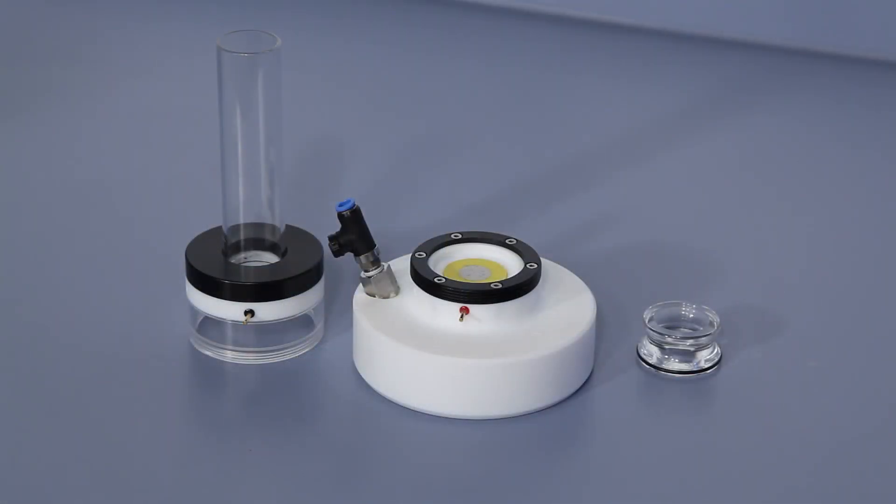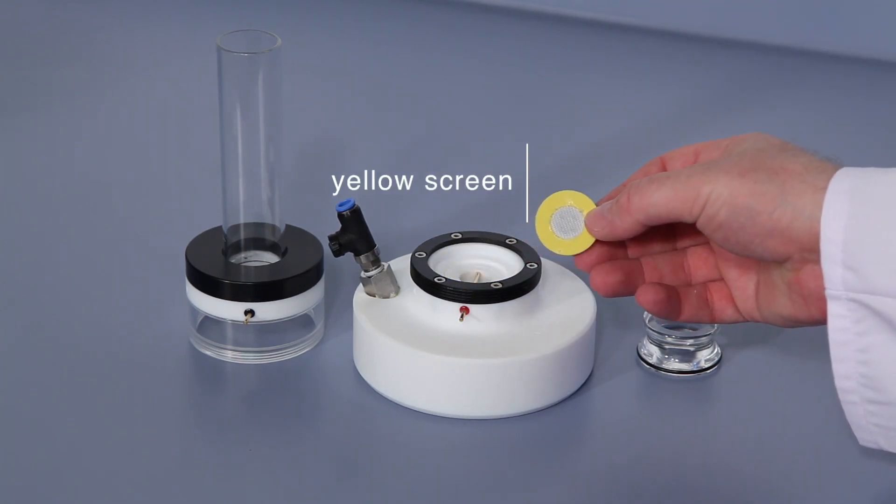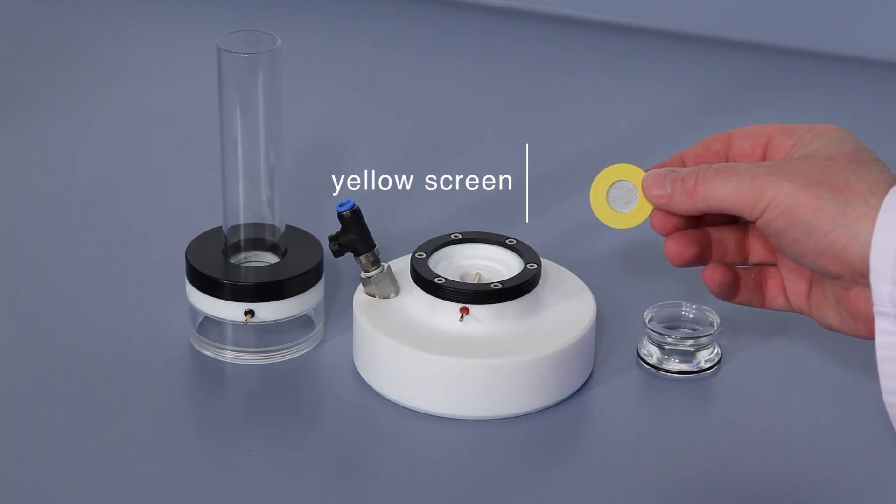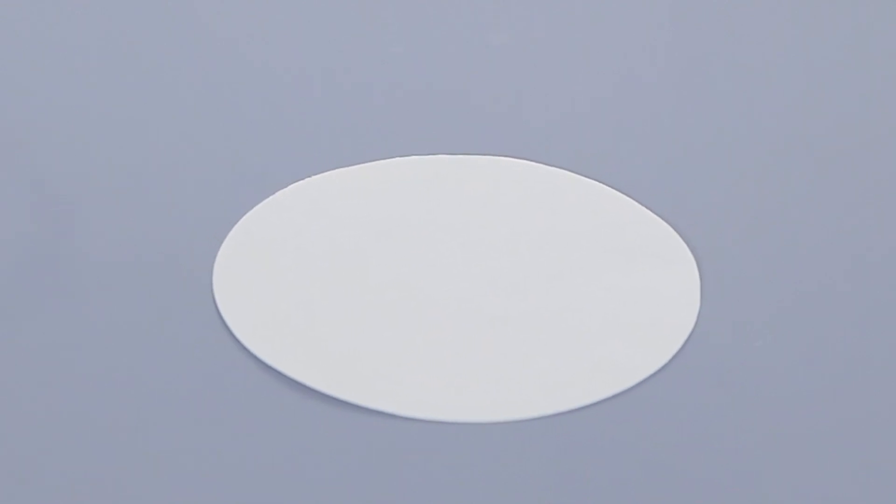The special measuring cell comes with a yellow screen, which works as a supporting structure for a filter paper. You may use any filter paper with a suitable pore size to retain the solids of the suspension to be measured.